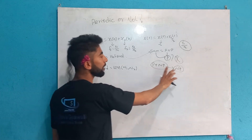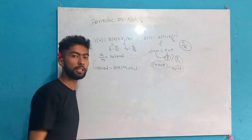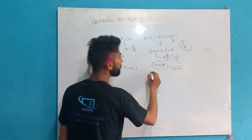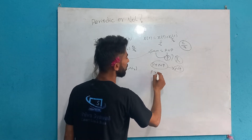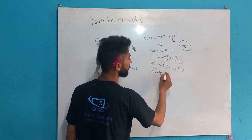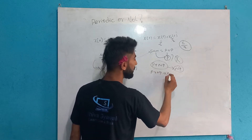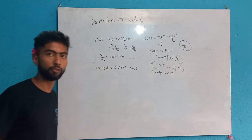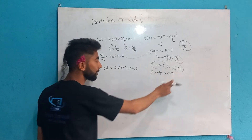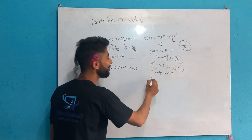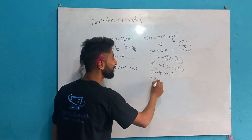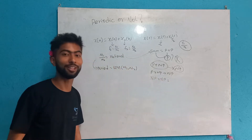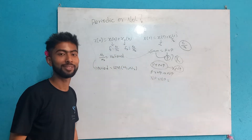Periodic plus non-periodic is non-periodic. Periodic multiplied by non-periodic is also non-periodic — the product is non-periodic. Non-periodic multiplied by non-periodic is also non-periodic.